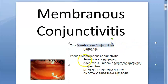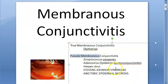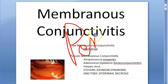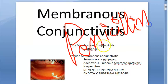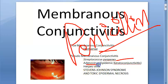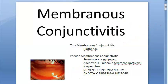To summarize: membranous conjunctivitis includes true membranous conjunctivitis (diphtherial) and pseudomembranous conjunctivitis caused by Streptococcus pyogenes, adenovirus, herpes virus, Stevens-Johnson syndrome, and toxic epidermal necrolysis. True and pseudomembranes are very difficult to differentiate. If left untreated, complications include symblepharon, trichiasis, entropion, and more. Treatment is with penicillin for bacterial causes; for adenovirus, the membrane can be removed.